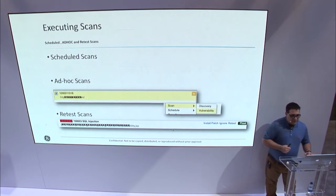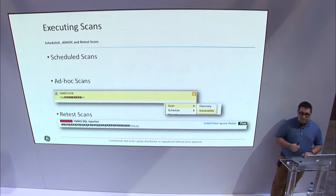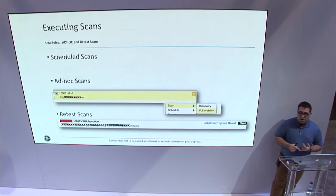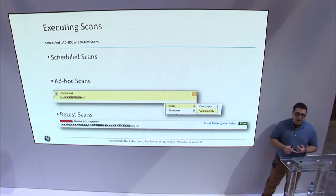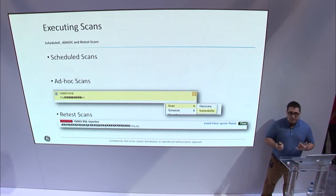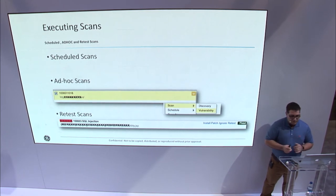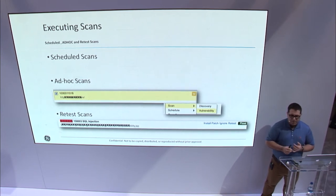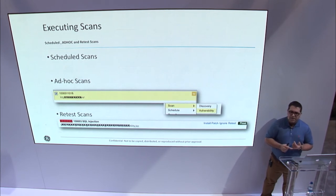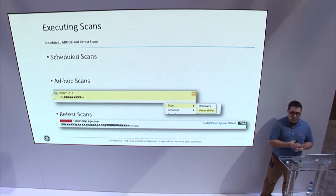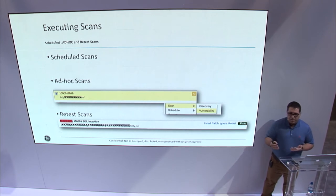One last point about scanning is authentication. Qualys gives us several options like basic auth, form-based authentication, and script-based authentication with Selenium scripts. When you create your application, you can apply a default authentication record, or if you're scheduling a bulk scan, you can schedule a global authentication record. Qualys is also releasing a new feature that will allow you to test your authentication prior to scanning, so you won't have to run through an entire scan to know whether authentication has failed.